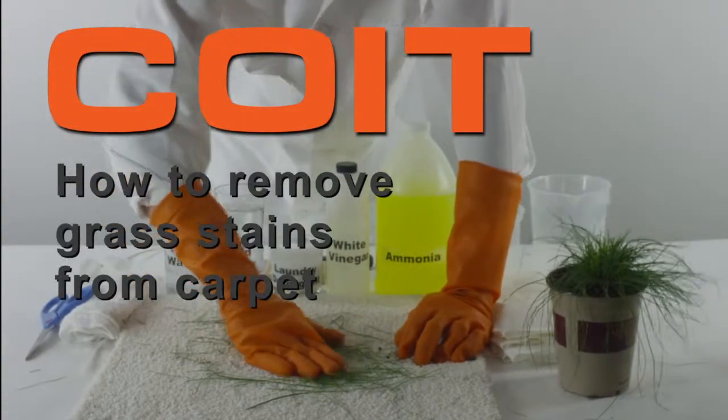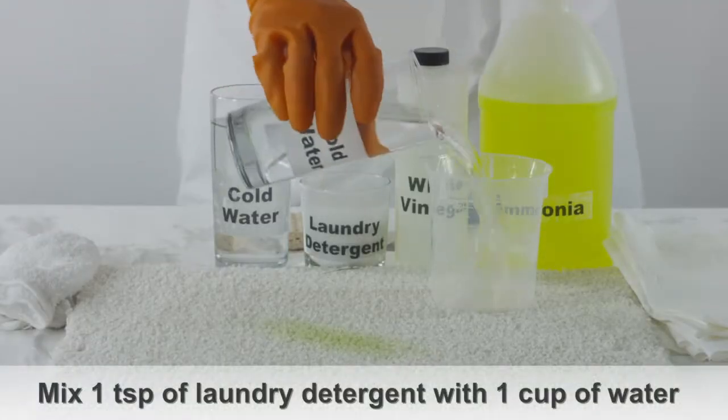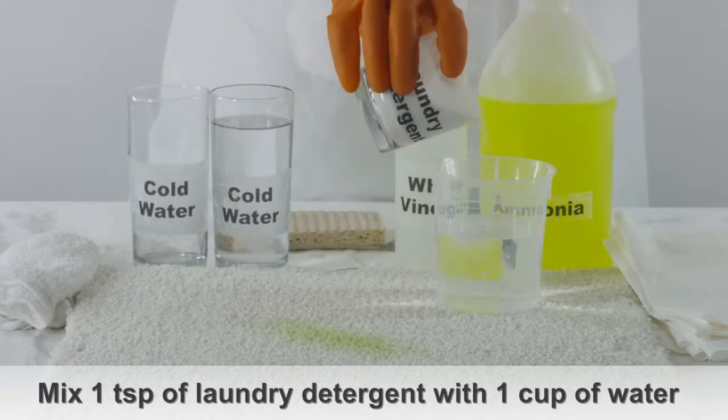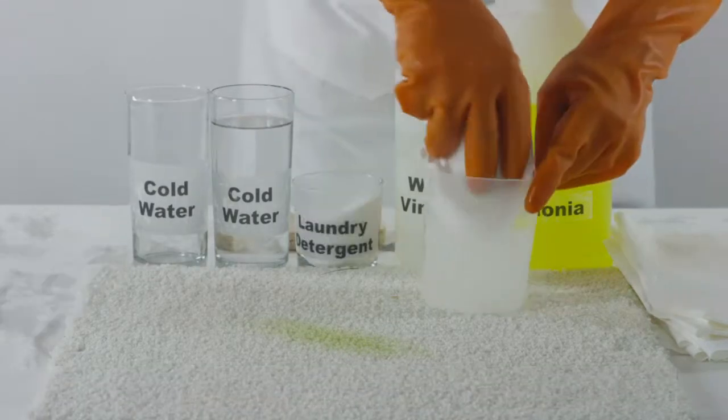How to get grass stains out of carpet. Upon discovering the stain, mix one teaspoon of mild laundry detergent with a cup of cold water.